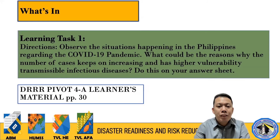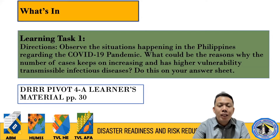Under 'What's In' on page 30, you have Learning Task Number One. Directions: observe the situations happening in the Philippines regarding the COVID-19 pandemic. What could be the reasons why the number of cases keeps on increasing and there is higher vulnerability to this transmissible infectious disease? Do this on your answer sheet.